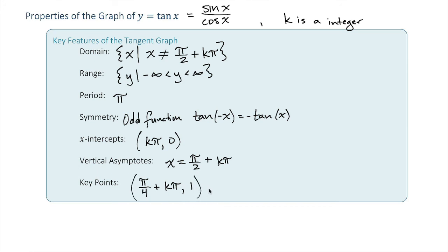Okay, that's a key point. Another key point is if we look at negative pi over 4. And at negative pi over 4, they're both square root of 2 over 2, but one of them is negative. At negative pi over 4,